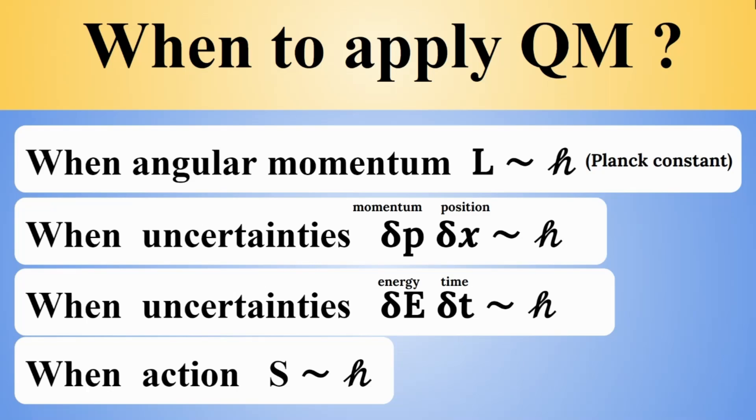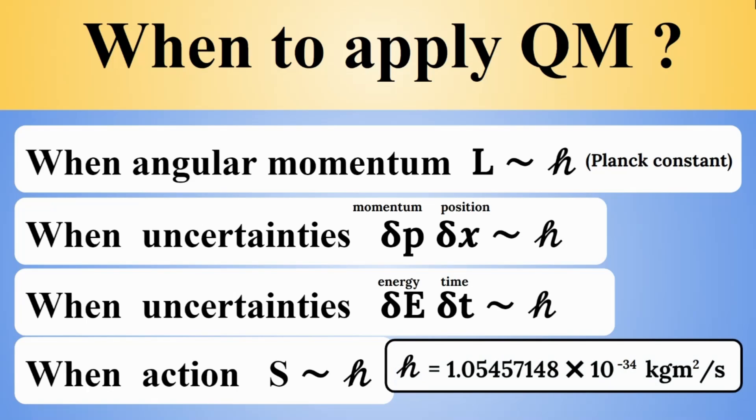Planck's constant is a really small number. It's 1.05 times 10 to the power minus 34 kilogram meter square per second. So, 10 to the power minus 34 is a very small number. So, if we have really small numbers, then we are in the domain of quantum physics.